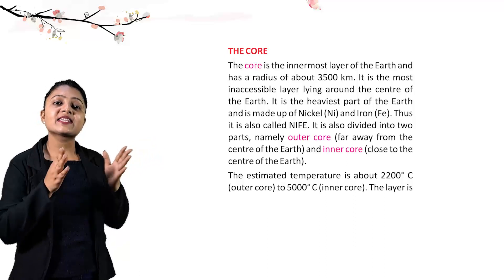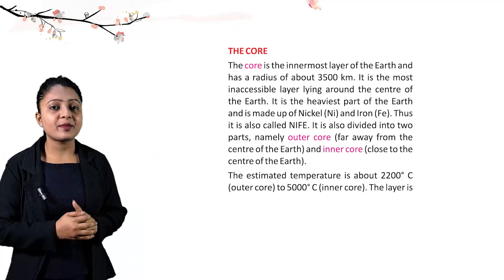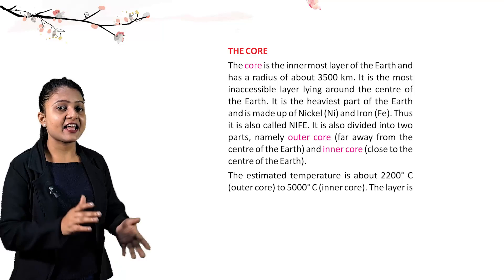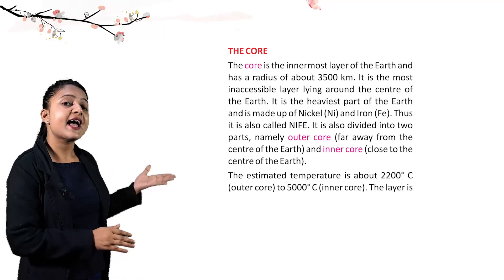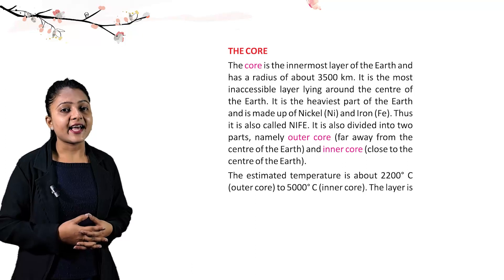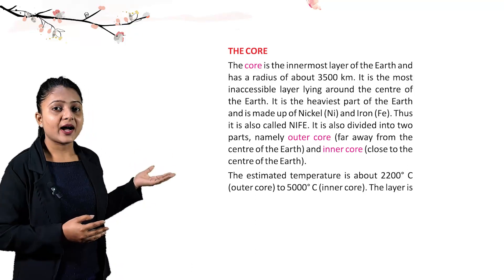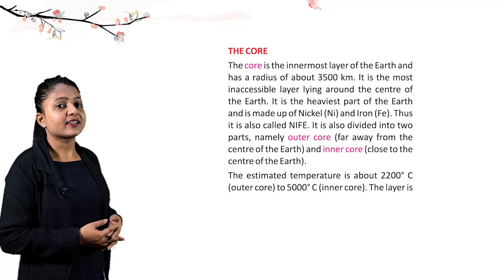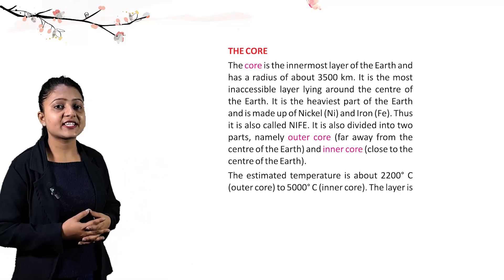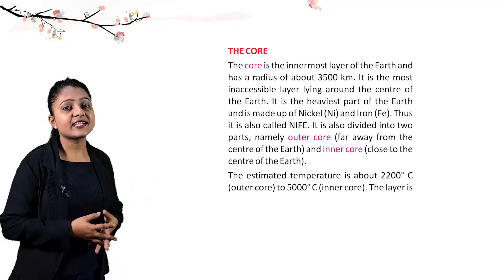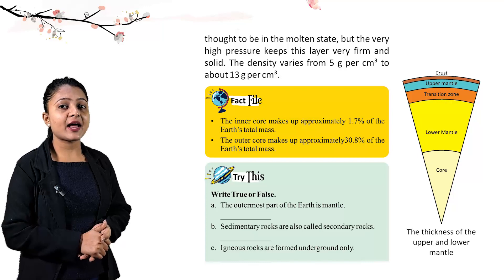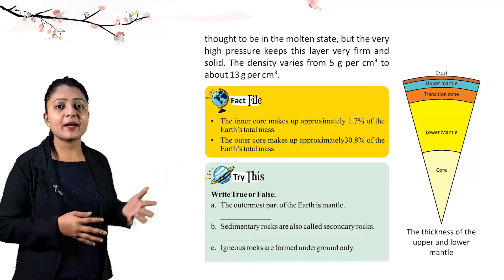The core is the innermost layer of the earth and has a radius of about 3500 km. It is the most inaccessible layer, lying around the center of the earth. It is the heaviest part, made up of nickel and iron — thus also called NIFE. It is divided into outer core (far from the center) and inner core (close to the center). Estimated temperature ranges from about 2200 degrees Celsius in the outer core to 5000 degrees Celsius in the inner core. Very high pressure keeps this layer firm and solid. Density varies from 5 g/cm³ to about 13 g/cm³.